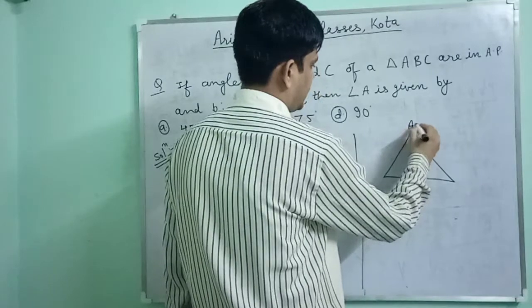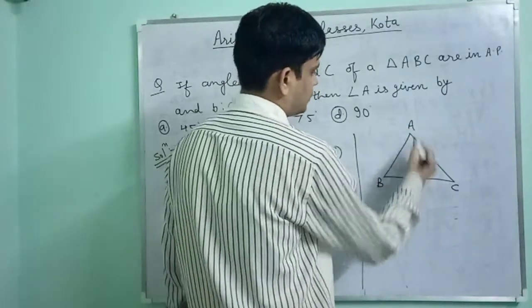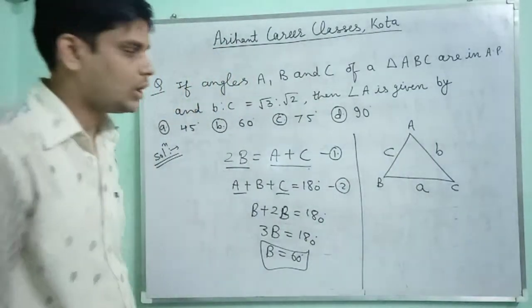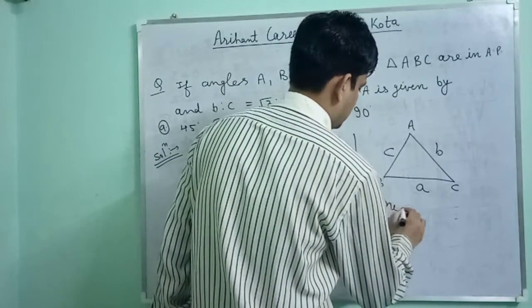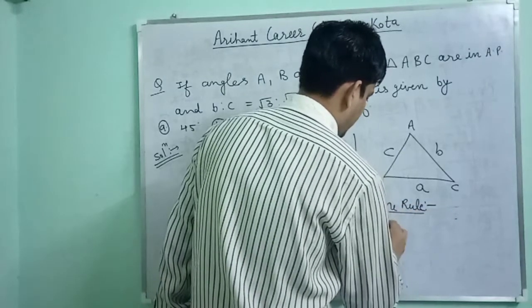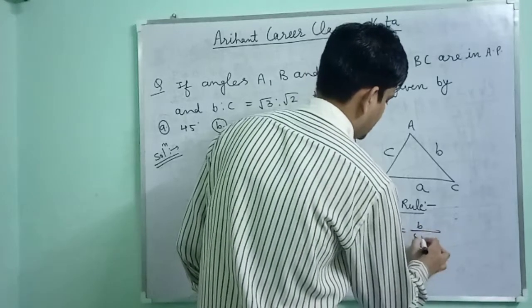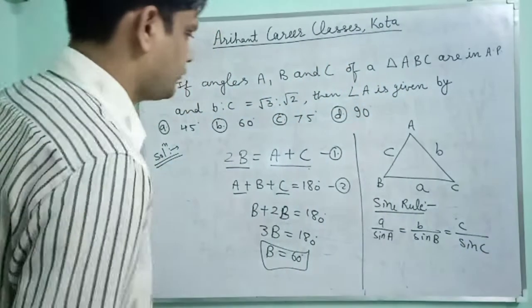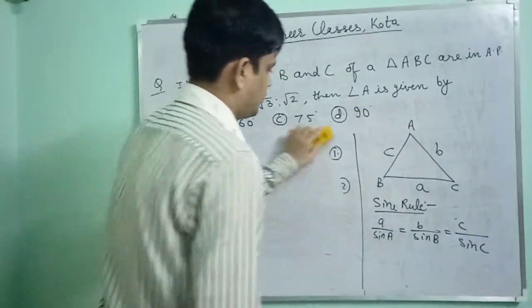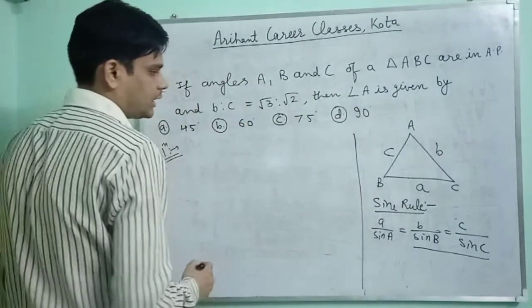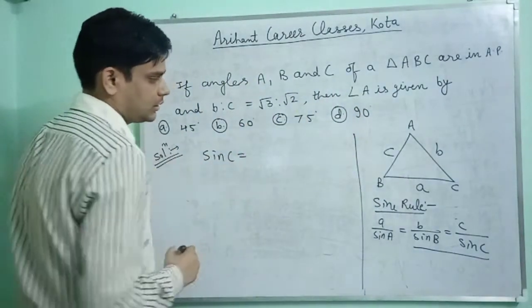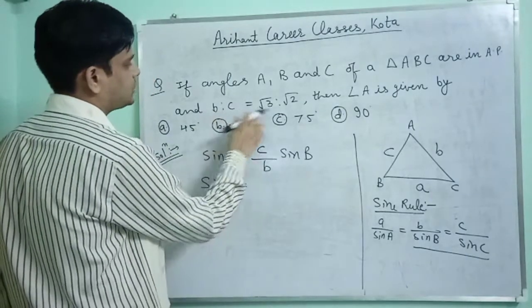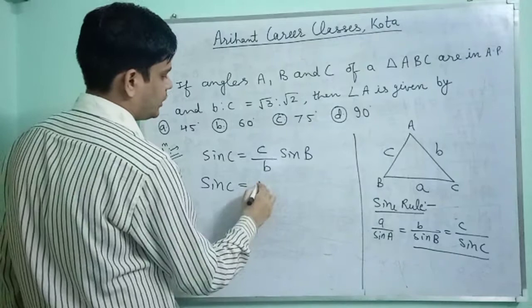Now using the sine rule in triangle ABC: a/sin A = b/sin B = c/sin C. So sin C divided by sin B equals C upon B. Since B to C equals root 3 to root 2, sin C equals C upon B times sin B, which gives root 2 by root 3.